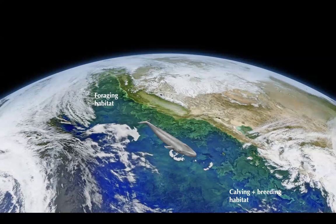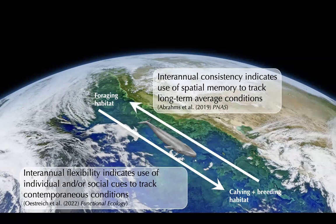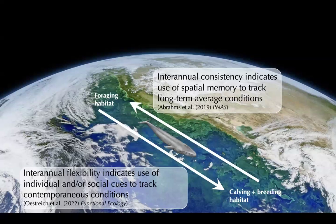Zooming back out to the annual cycle, what we showed is that blue whales exhibit interannual flexibility in when they depart the foraging habitat, tracking contemporaneous ecosystem conditions. Interestingly, this is the exact opposite of what Brianna Abrams and others have shown for migration in the opposite direction, as animals approach the foraging habitat. This makes sense: when approaching the foraging habitat, animals have no contemporaneous ecosystem information, so they likely rely on long-term memory of average conditions. But as they decide when to depart, they've been feeding in this ecosystem for months and have accumulated information — individually and or socially — to make a more flexible decision aligned with contemporaneous ecosystem conditions.